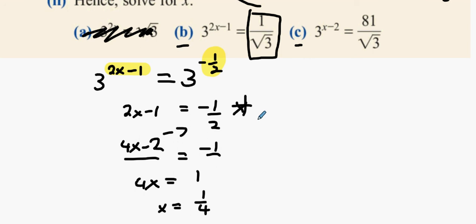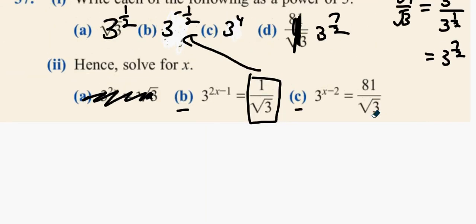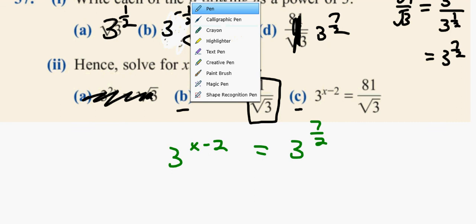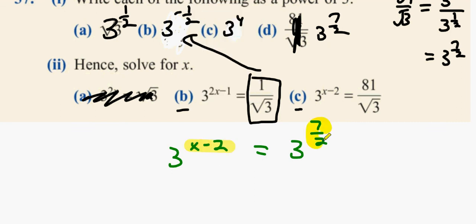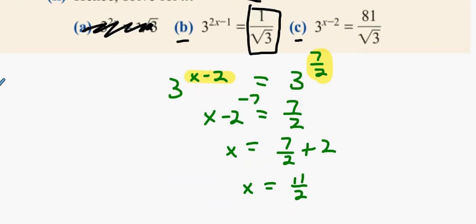The last one. What do we change 81 over root three with? Three to the power of seven over two. Yeah, okay. Now what do we do next? 3x minus 2 equals 7/2. Plus two, yeah. And then you throw that into the calculator and you get 11 over 2, 11 halves. 11 over 2, yeah, perfect, good man. Any questions with that one? All good, awesome.